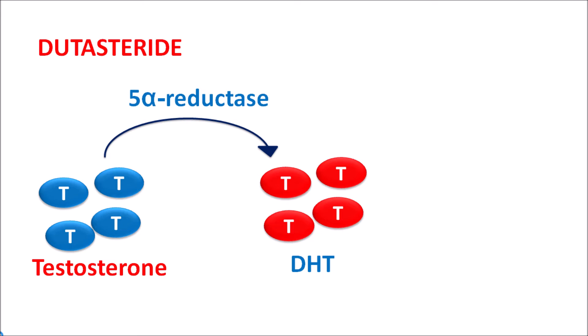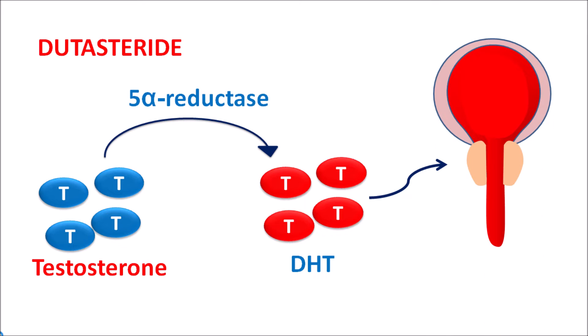Testosterone is converted into one of its metabolites, DHT (dihydrotestosterone). This reduction process is mediated by the enzyme 5-alpha reductase. DHT is the active form of testosterone which can act on the prostate gland to produce prostate enlargement. Normally it is responsible for prostate growth, but when DHT levels are excessively increased, it can produce prostate enlargement.